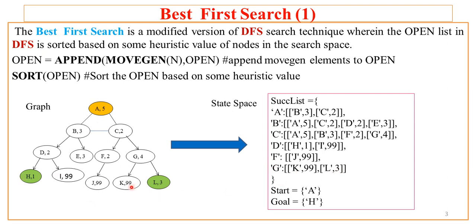All the leaf nodes are nodes having no successor, which is why they are not specified in the successor list. The given conditions are that the start node is A and the goal node to be found is H. Each node has a pair — that is, node name and heuristic value. For example, 4 is the heuristic value of A, 3 is the heuristic value of B, and 2 is the heuristic value of C. All nodes have their respective heuristic values.